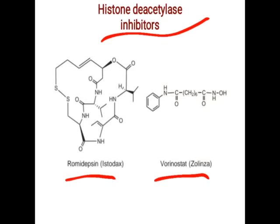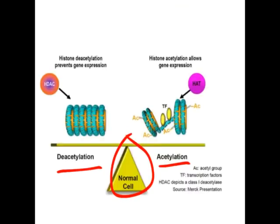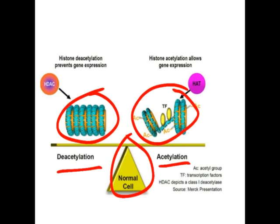The next classification of anti-cancer agents includes the histone deacetylase inhibitors, with examples romidepsin and vorinostat. Histone is the protein around which DNA coiling takes place. When DNA is in the coiled form, it does not produce any gene expression — meaning no transcription, translation, or protein biosynthesis. When DNA is in the uncoiled form, it produces transcription and translation, leading to gene expression and protein synthesis. That is the normal balance.